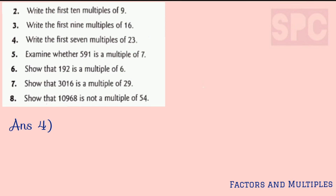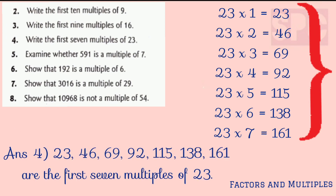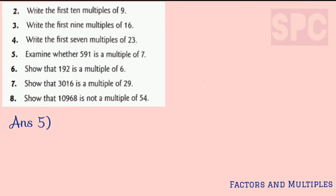Question number 4: write the first 7 multiples of 23. Similarly, we write the table of 23 up to 7 times. So: 23, 46, 69, 92, 115, 138, and 161 are the first 7 multiples of 23.